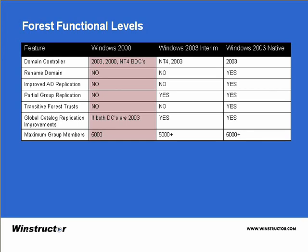This table shows some of the features available depending on which forest functional level you have. The next functional level is the Windows 2003 Interim Forest Level, which allows Windows 2003 domain controllers to interact with domain controllers running Windows NT4 or Windows 2003. This level does not support domain controllers running Windows 2000.